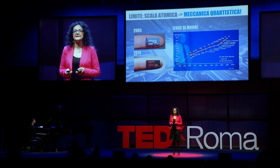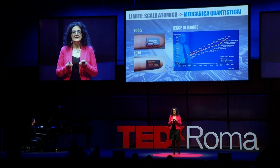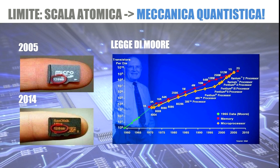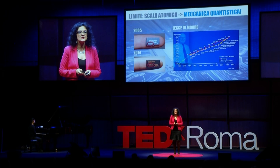Obviously, everything depends on how much we can increase the transistor. Here we have the curve that tells us the so-called law of Moore, that tells us that the number of transistors doubles about every 18 months. But will we arrive at a moment in which the number of transistors will reach a limit? Certainly yes. This moment is when we arrive at the limit of the atomic scale.